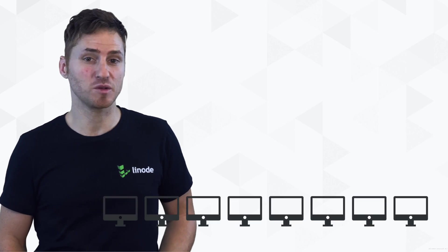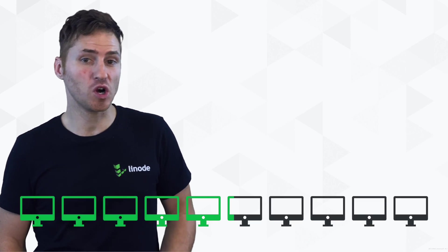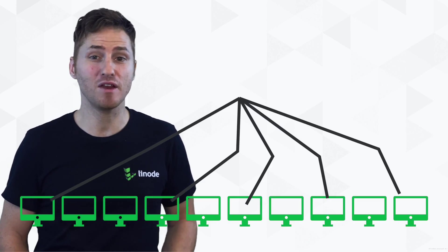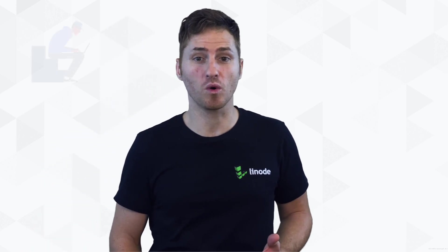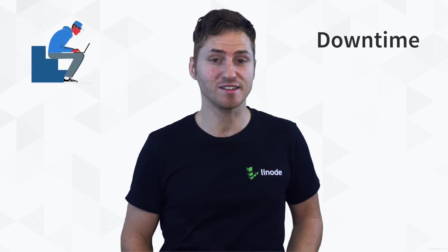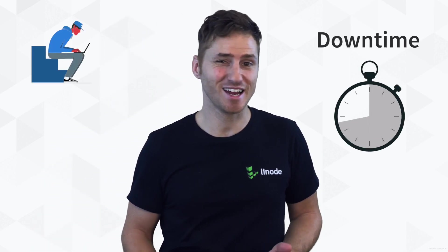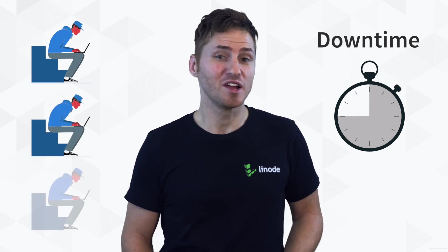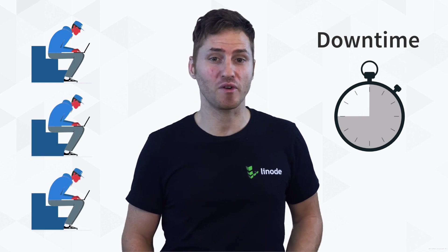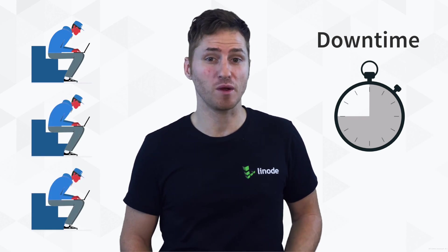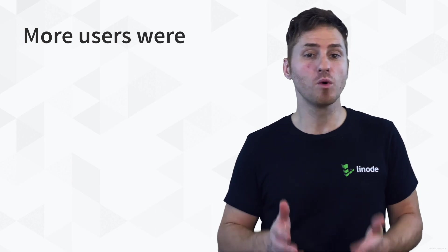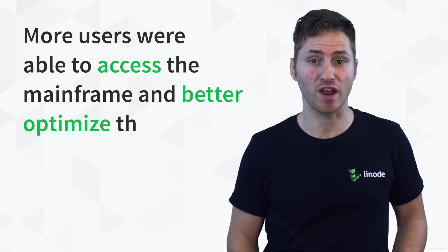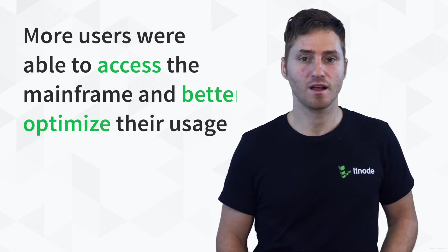Users accessed the computers from terminals that were networked to the mainframe. Because the mainframe used by only one user would have periods of downtime — be it seconds or minutes — timesharing allowed multiple users to schedule their operations when the mainframe was inactive. In this way, more users were able to access the mainframe and better optimize their usage.